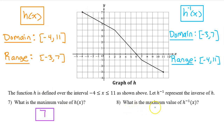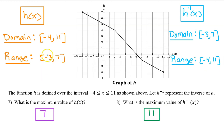We can find the maximum value of h inverse for number 8 in the same way, even though h inverse is not shown. It will be the upper limit of the range, which is 11. In general, the maximum value of a function or its inverse will be the upper limit of the range, and the minimum value will be the lower limit of the range.